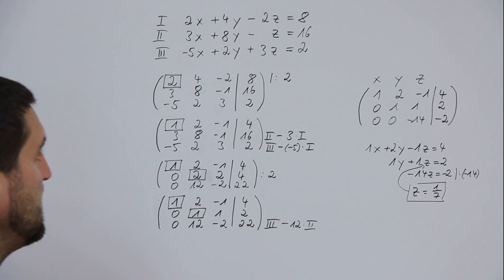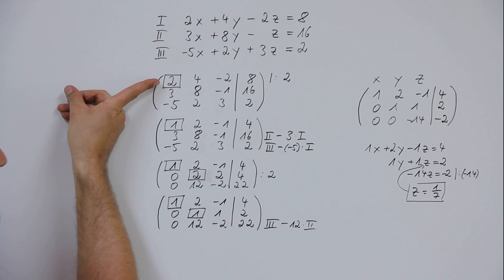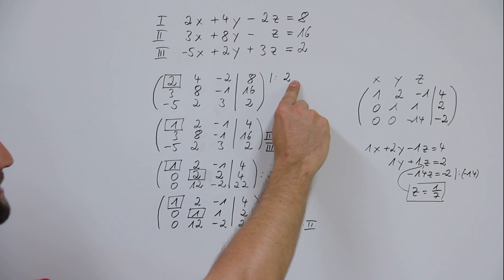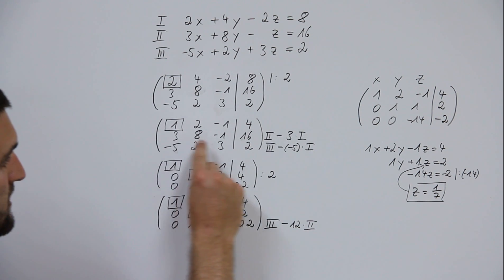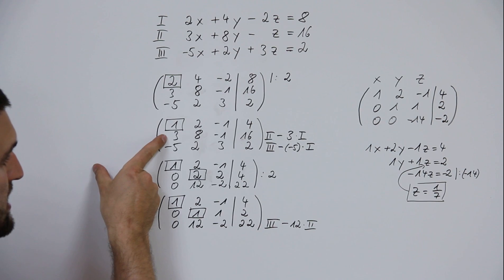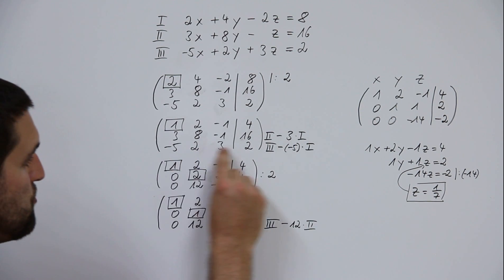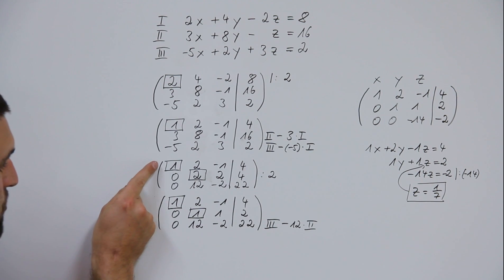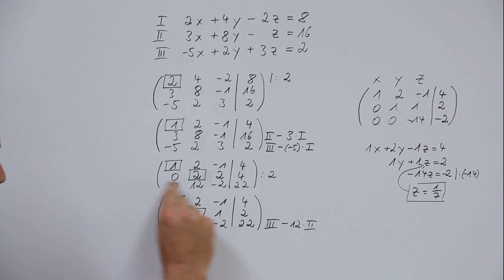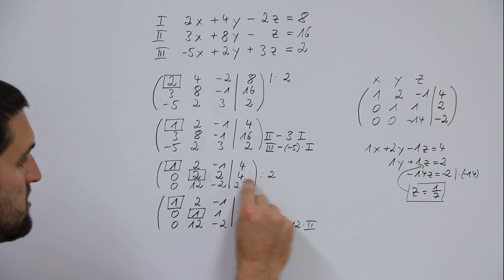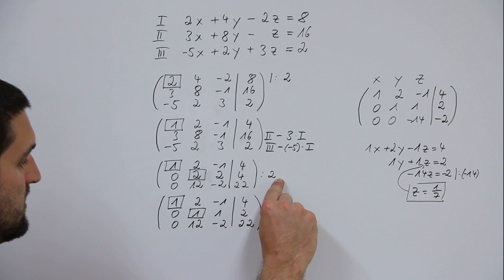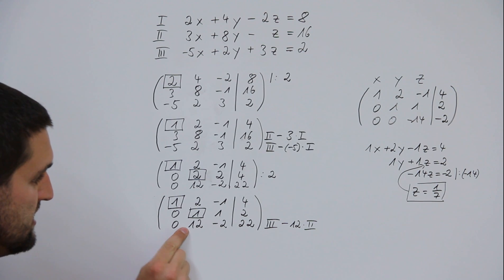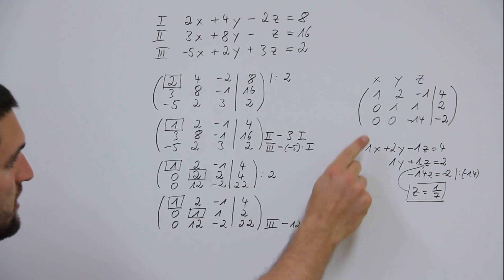Once again, the steps are always the same: mark the first pivot element, divide the whole first line through the pivot element, then line two minus whatever stands here times one, line three minus whatever stands here times one, move to the new pivot element one down one right, divide the whole line two through the new pivot element, and finally line three minus whatever stands here times two — and you have finished.